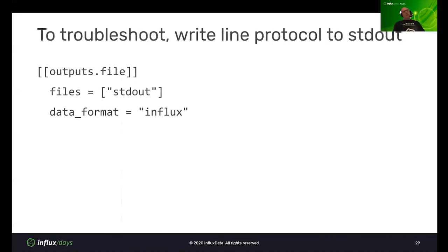Another troubleshooting tip is to write your outputs to standard out as well, so you can see the line protocol data coming out. This is handy when you first run things and want to make sure everything works — it gives you quicker feedback than writing to the database. Once confirmed, comment out the stdout output by adding a hash sign to the left of each line.